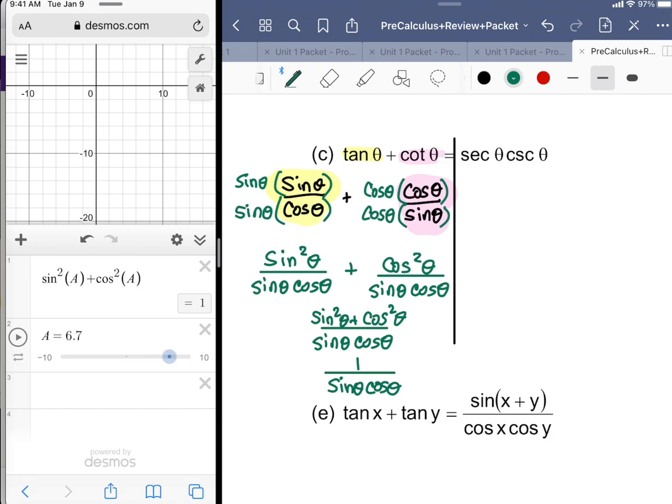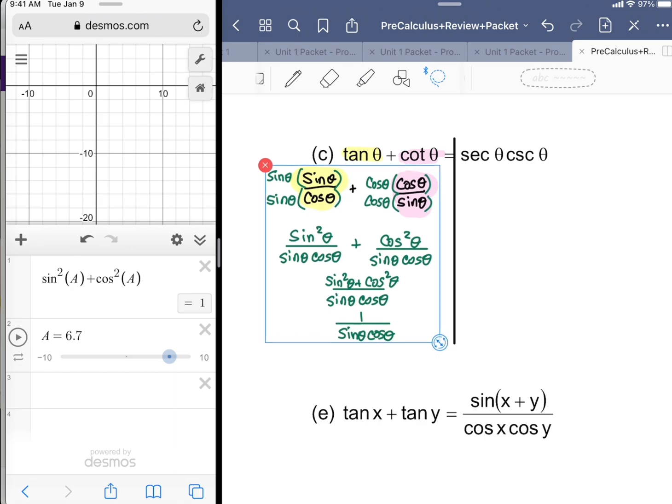You can always verify. You're tempted to put in a theta because the problem says theta. Just use a dummy variable like a for angle. If you don't remember that something is an identity, you can always use Desmos to sort of reinvent it.